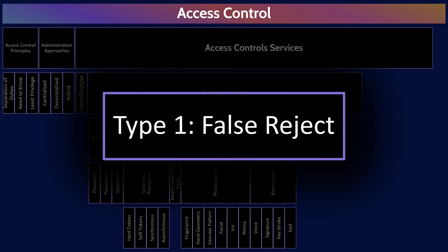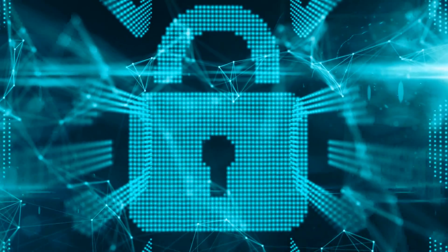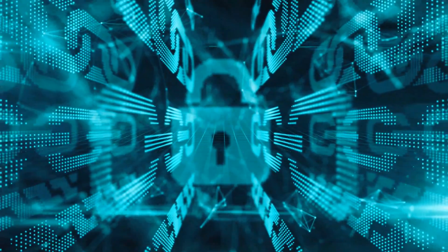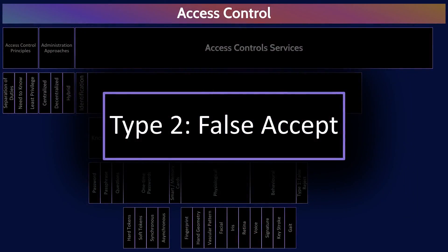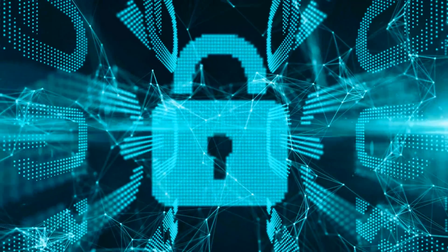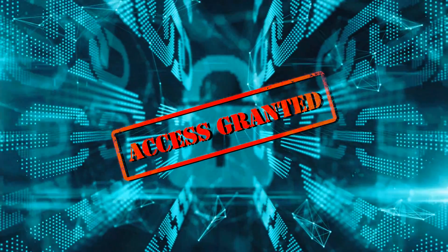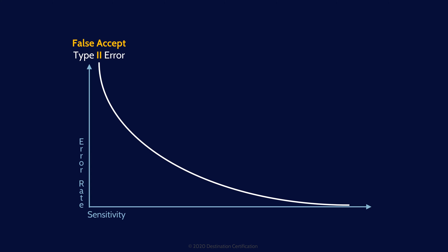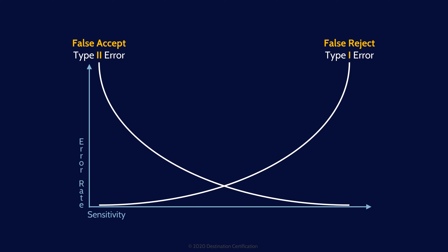A challenging aspect of biometric systems is they are not binary — they are not 100% sure that it is a valid user and not 100% sure that it is an invalid user trying to authenticate. As such, we have to deal with two types of errors. The first is a type 1 false reject, where a valid user is falsely rejected. A type 2 false accept is the inverse, where an invalid user — say an attacker — is falsely authenticated and given access. The crossover error rate is where the type 1 and type 2 error lines intersect on a graph, also called the equal error rate, and is a good measure of the overall accuracy of a biometric system.